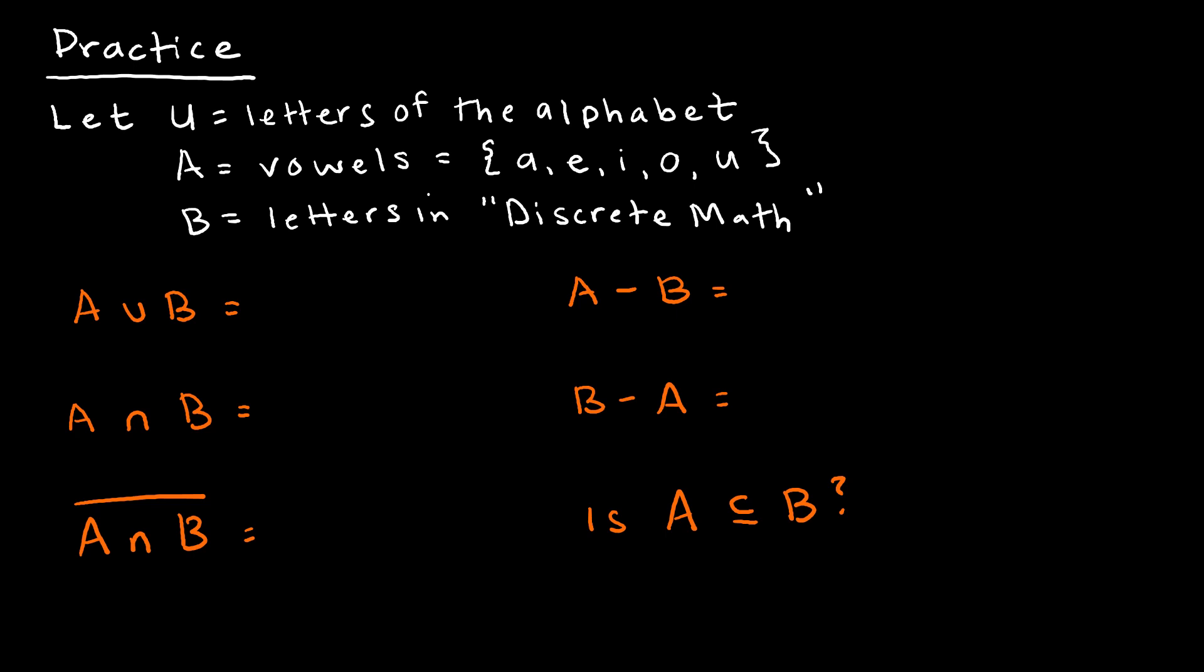So before I get started, I really am going to rewrite set B in roster notation. So I'm just going to list out all of the elements of that set. And again, I don't care for writing them more than once. So even though I've got two E's, I'm only writing E once. And then M, A, I've already used T, and then H. And again, if I wanted to, I could certainly write those in alphabetical order, but really, it's not going to matter.